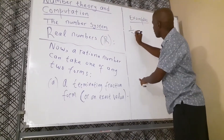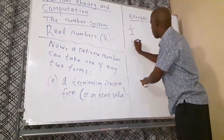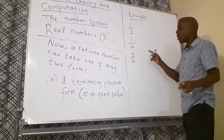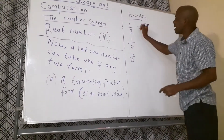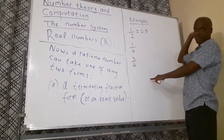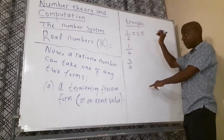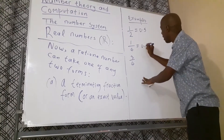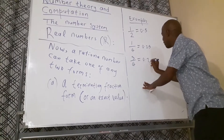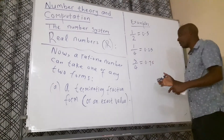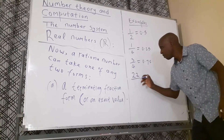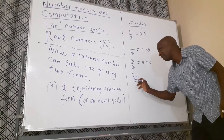Examples include one half, a quarter, three quarters, and so on. These are called terminating or exact value because one half equals 0.5 — that's the exact value. A quarter equals 0.25, and three quarters equals 0.75. We can also have something like 22 over 7, which is also considered an exact value or terminating value.